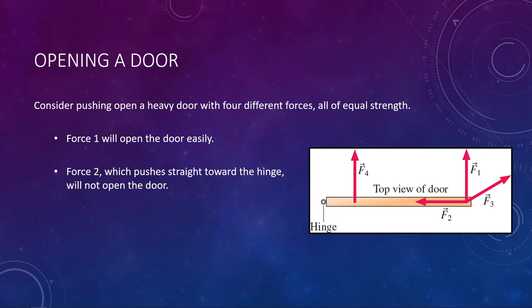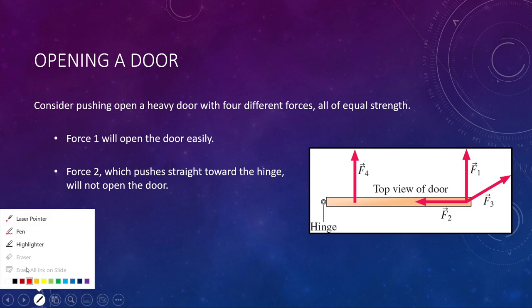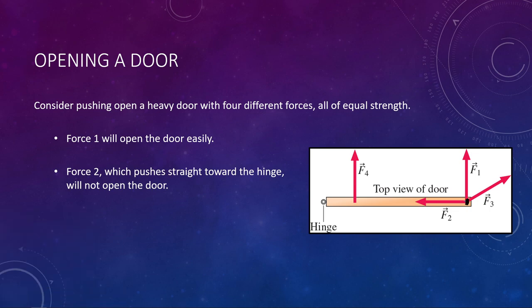Force two acts at the exact same location as force one, right here at the end of the door. But the difference is this one is pushing straight in toward the hinge. Pushing straight against the side of a door is not going to cause any rotation at all — the door won't open. So even though it's the same size force at the same location, nothing happens.